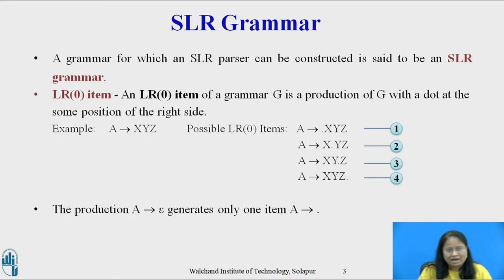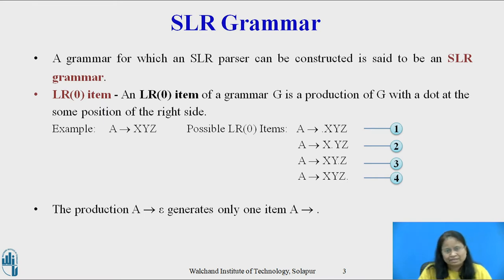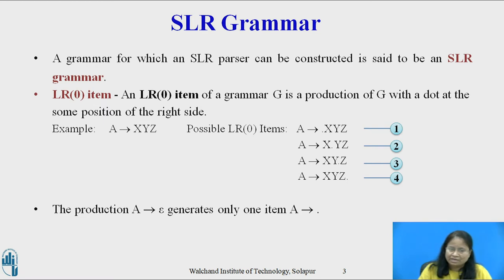An LR0 item of grammar G is a production of G with a dot at some position of the right side. Thus, the production A derives xyz yields four items: A derives dot xyz, A derives x dot yz, A derives xy dot z. The production A derives epsilon generates only one item: A derives dot.